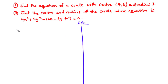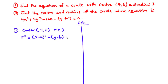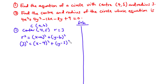Let's solve question 1. We are told the center is (4, 5) and the radius is 3. From the equation of a circle, R² = (X − A)² + (Y − B)². Substituting A = 4, B = 5, and R = 3, this becomes 3² = (X − 4)² + (Y − 5)², which is 9 = (X − 4)(X − 4) + (Y − 5)(Y − 5).